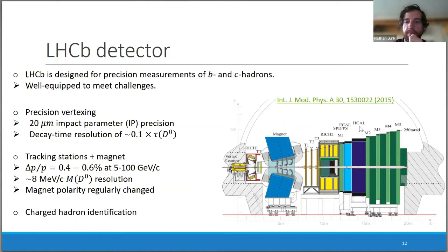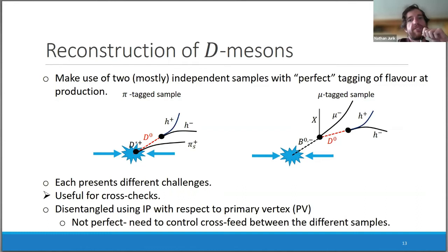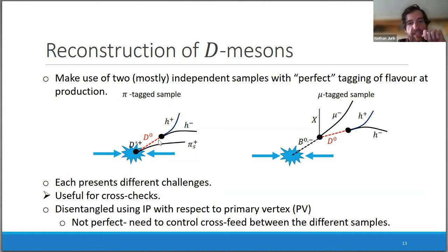Charged hadron identification takes place in the RICH detectors and the muon stations. We make use of two mostly independent samples with essentially perfect tagging of flavor at production. The first is the prompt sample, where an excited charm meson decays at the primary vertex via the strong interaction into the D0 and a soft pion — the charge of the pion tells us the flavor of the D0.